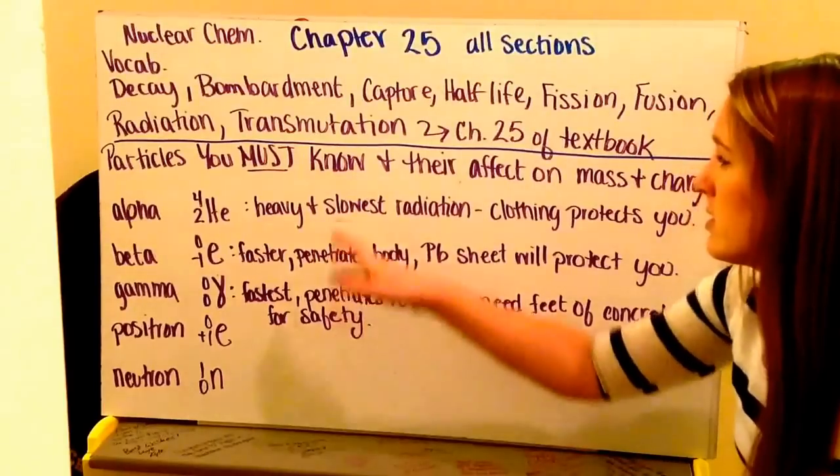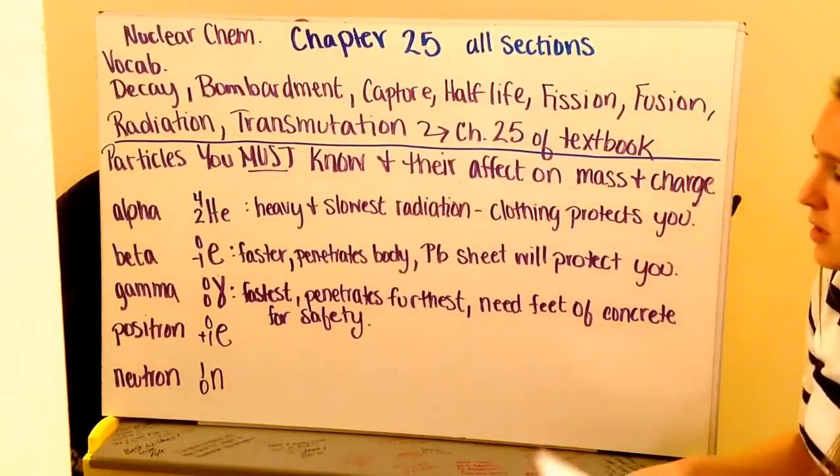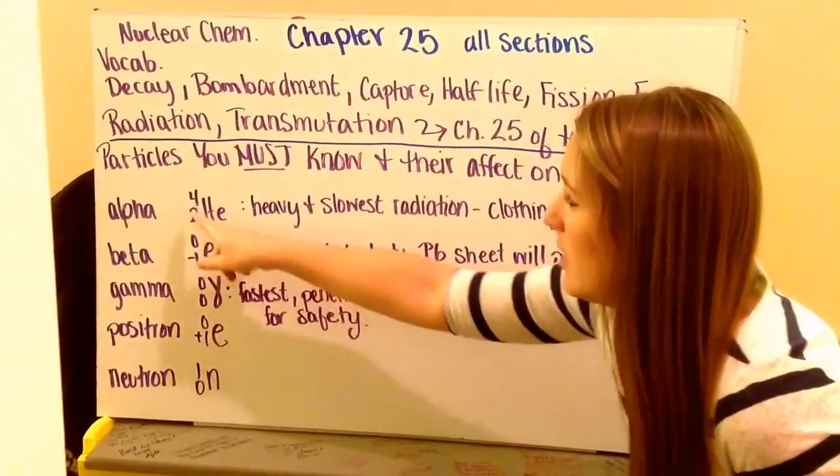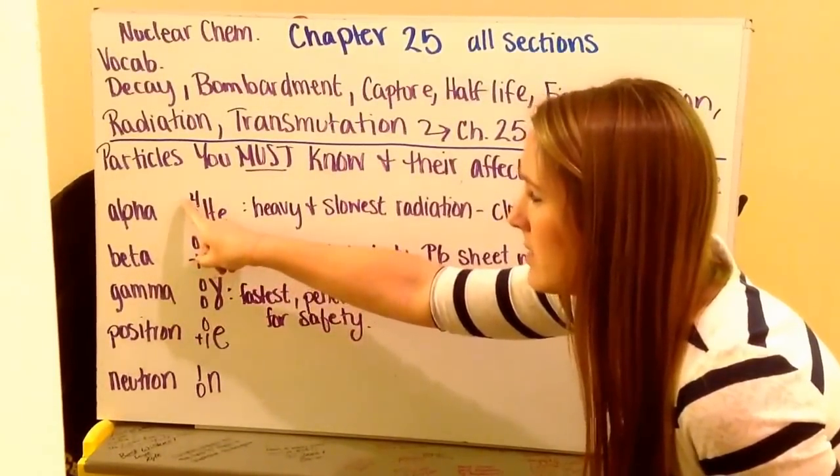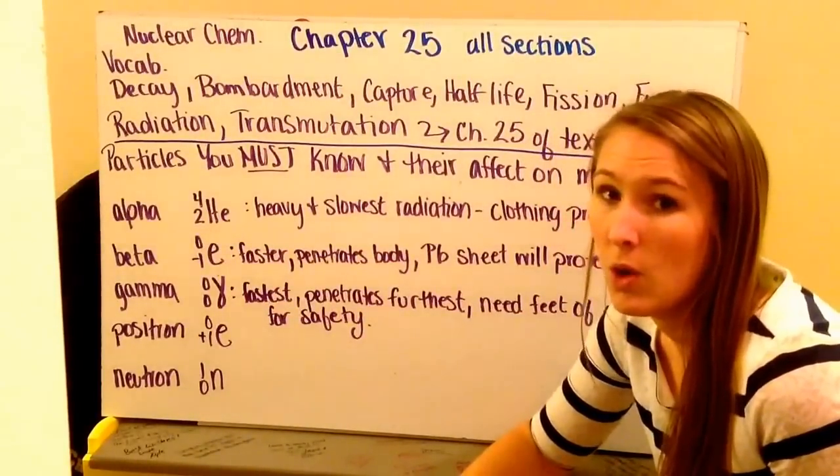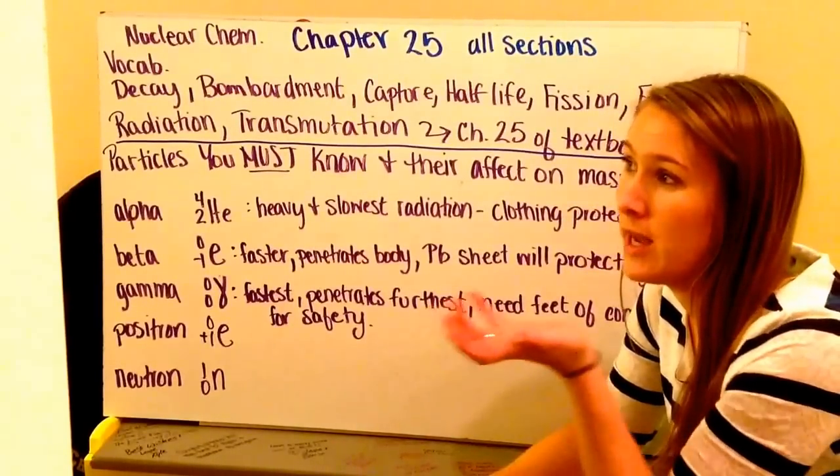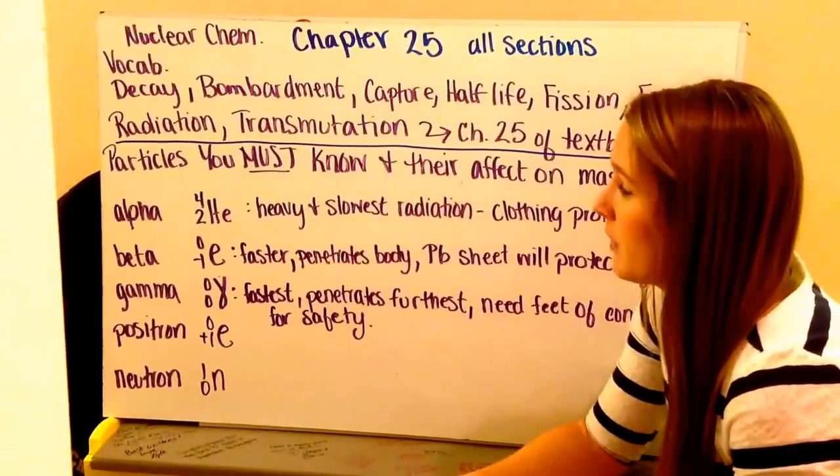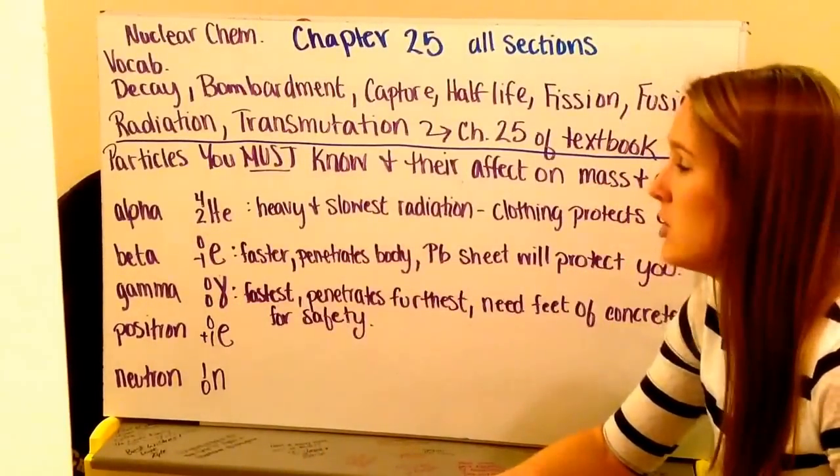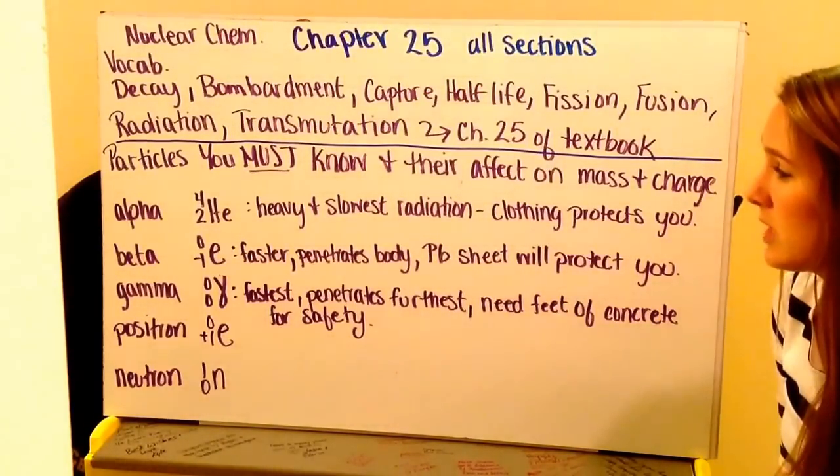There's a couple particles that you must know and you want to know their effect on the mass number and the charge of your nuclei. We have our alpha particle. This is shown as a helium atom and we're just looking at the nucleus. So we have the mass number of the nucleus, number of protons plus neutrons, and our atomic number or number of protons in the nucleus which is our charge. We have a charge of two. Your alpha particles when in radiation are going to be the heaviest and slowest radiation and your clothing can protect you.